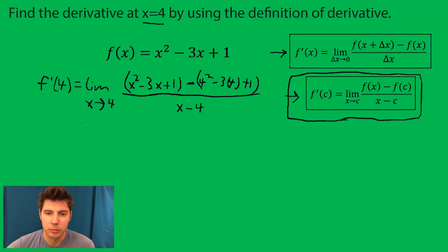And now we just simplify. Bring all this stuff back down. And then four squared is 16 minus 12 is four plus one is five. So it'd be minus five all over x minus four.